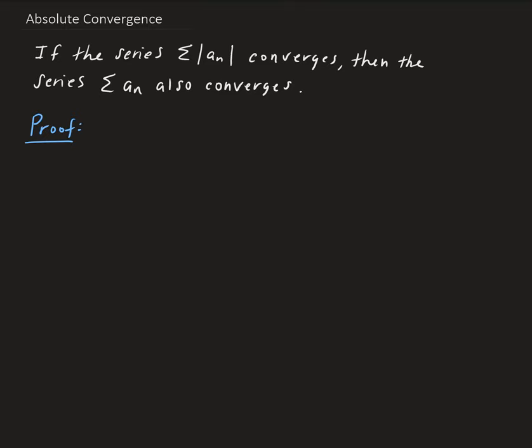In this lesson, I'm going to discuss absolute convergence for a series. So if an absolute series converges, then the corresponding series also converges — meaning that if you take away the absolute value of the nth term, that series also converges. So I'm going to prove this result.